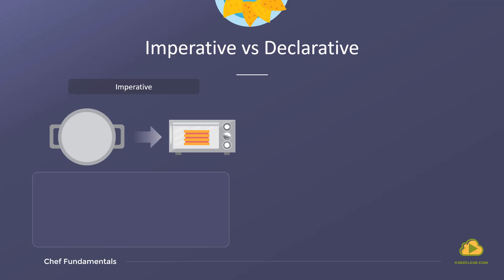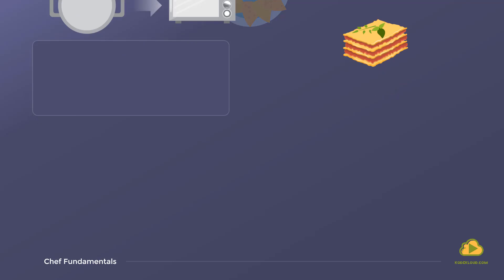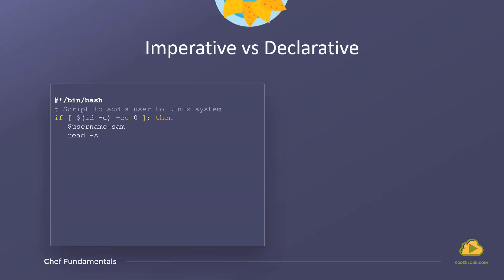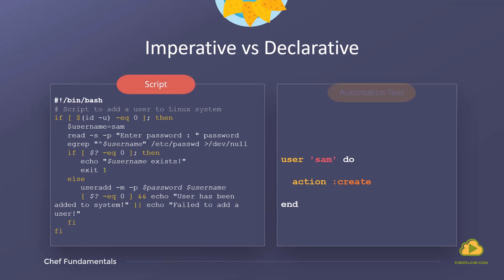Instead, wouldn't it be great if you could just tell the chef to cook you a lasagna? That's the declarative way of ordering a dish. In the script we saw in the previous slide, we specify how to create the user, what commands to use on the OS, etc. This is an example of imperative programming. On the right is the declarative approach, where we achieve the same results with only a few lines of Chef code.